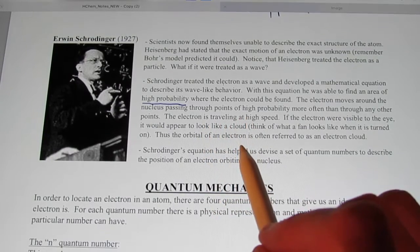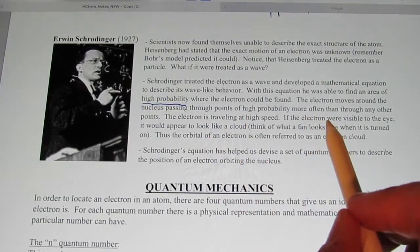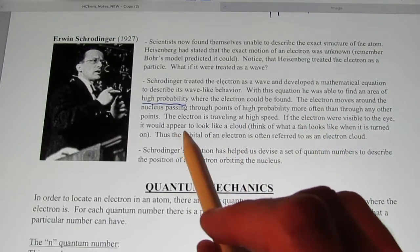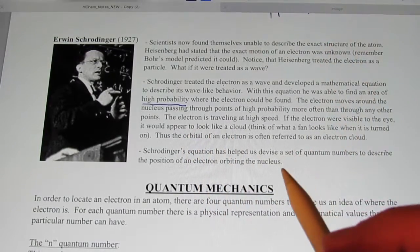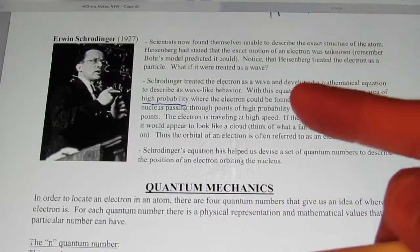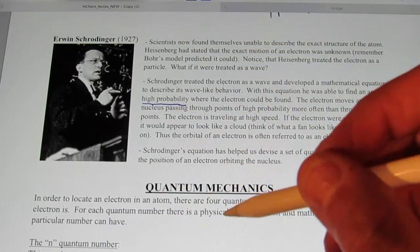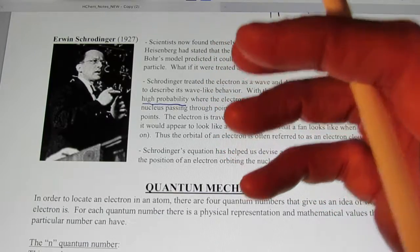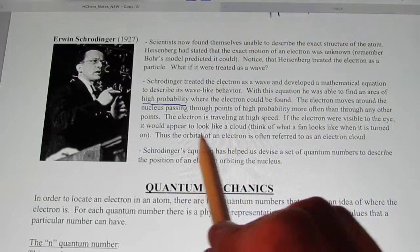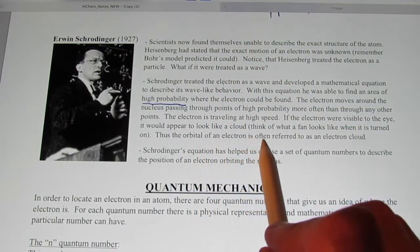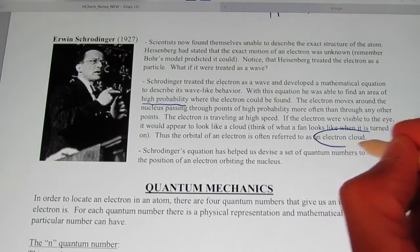The electron is traveling at a high speed. If the electron were visible to the eye, it would appear to look like a cloud. So think of what a fan blade looks like when it's turned on. It's a blur. So as the electron moves around in these three-dimensional spaces, it would appear to be a cloud. Thus, the orbital of an electron is often referred to as an electron cloud.